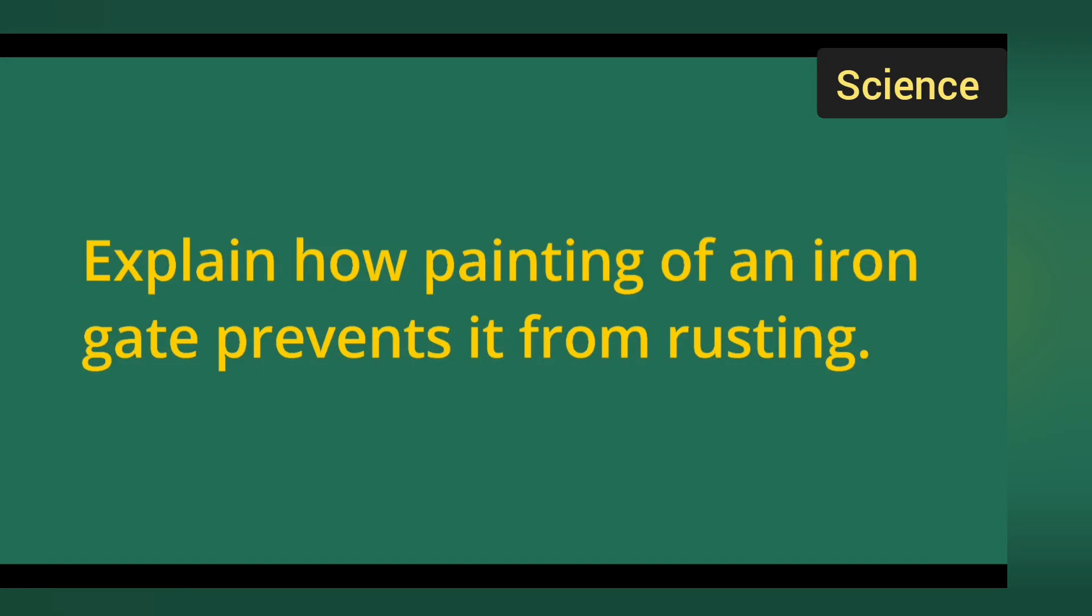So, in today's class of science, today's question is explain how painting of an iron gate prevents it from rusting.